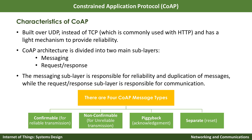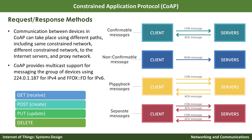CoAP has four different message types: confirmable, non-confirmable, piggyback, and separate. Confirmable means it is used for reliable communication. Non-confirmable means for unreliable communication. Piggyback uses the acknowledgement, and separate is used for reset. A visualization of the four types of messages is illustrated here, showing how confirmable, non-confirmable, piggyback, and separate messages work in different ways.